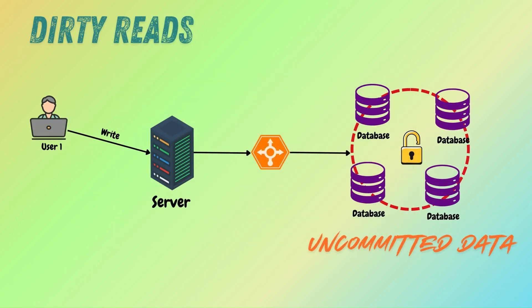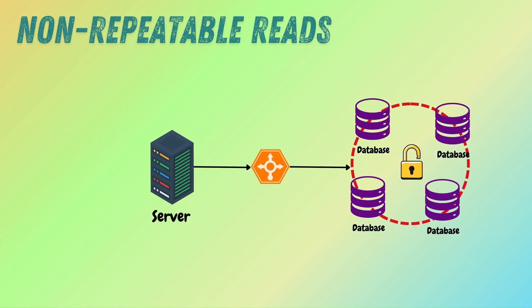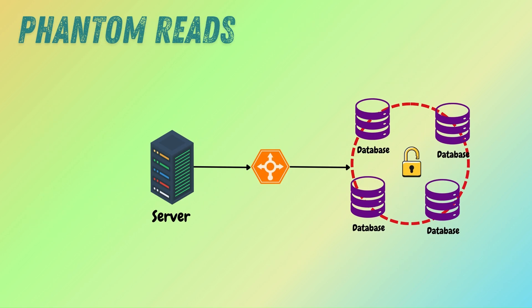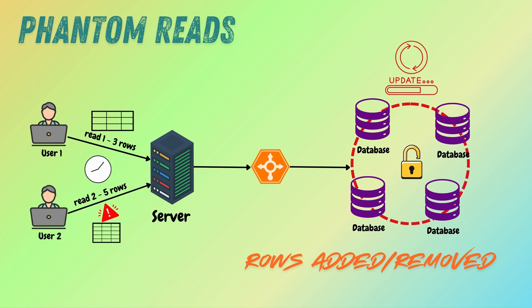Why do these levels matter so much? Without the right isolation, you can end up with problems like dirty reads — reading uncommitted data that might later be rolled back. Non-repeatable reads — re-reading data and getting different values if something is updated in the meantime. Phantom reads — finding different rows in the result set when re-reading data after another transaction has added or removed rows.